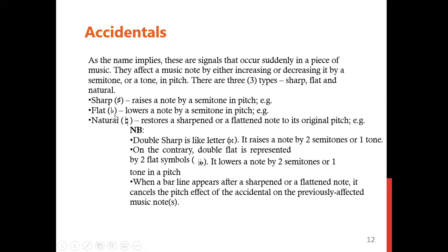The second accidental is called flat. Flat lowers a note by a semitone. The sign looks like a 'b.' The sign of sharp looks like a hash. The third accidental is called natural. The sign of natural wants to look like a hash sign like sharp but it's not the same. You draw an L and then another inverted L and make them come together — the first L goes like this and then the other one comes down.